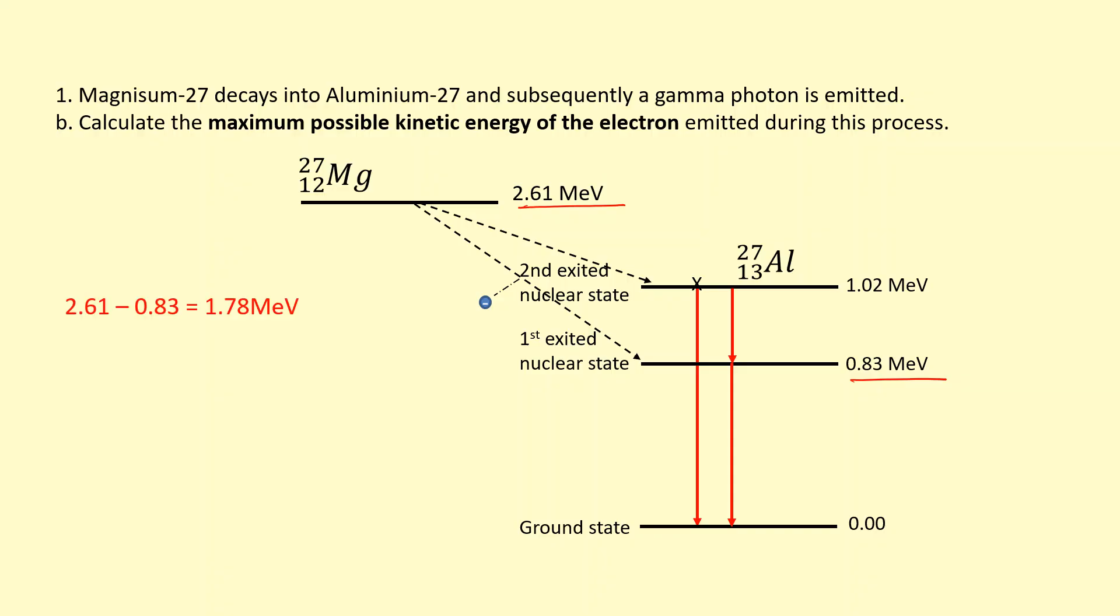So if we work out that energy difference, that's going to give us the energy of the electron that's emitted and we can turn that into joules.